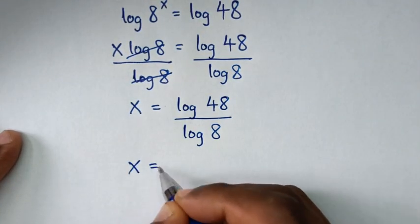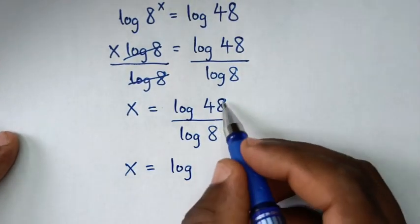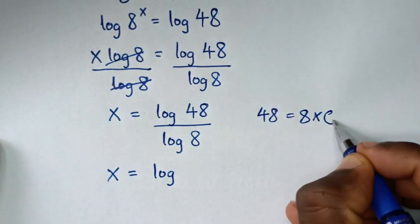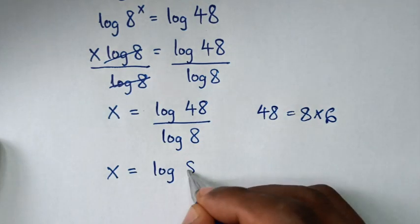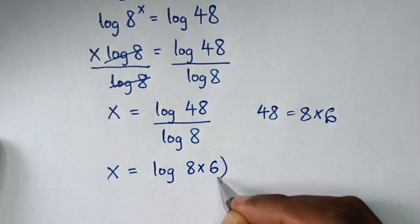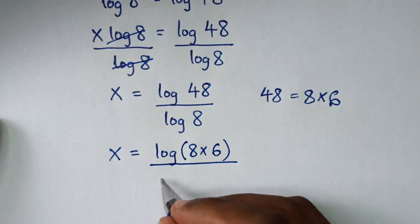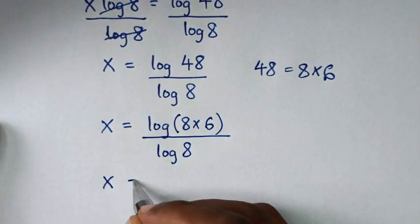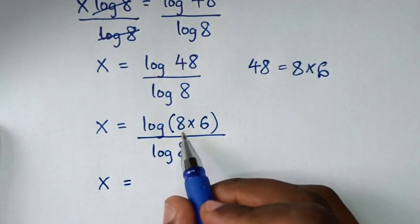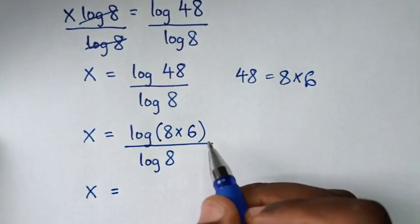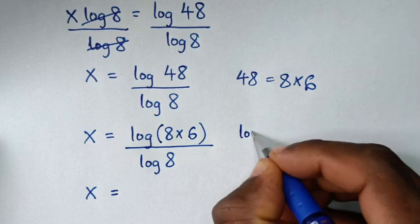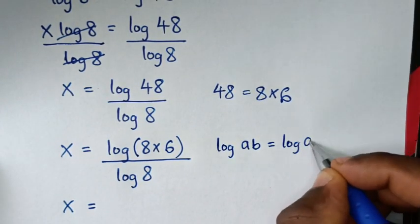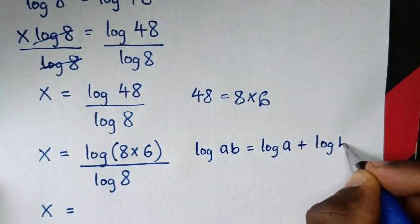Then it will be x is equal to log of 48. Now 48 is equal to 8 times 6, so log of 48 is the same as log of 8 times 6, then bracket over log of 8. From here, log of 8 times 6 is equal to log of 8 plus log of 6.